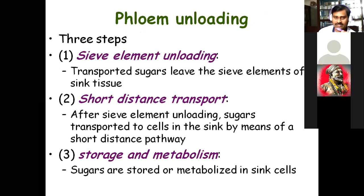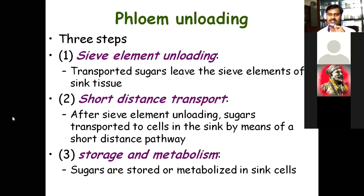Transported sugar leaves the sieve elements of the sink tissue and where there is need it is stored. Short-distance transport also takes place — movement of food material from cell to cell where there is a source or sink. Some metabolically active cells store the food material or sugar and convert it into another form such as starch or cellulose. Cellulose is involved in the formation of cell wall and other cell components, while starch is stored — in tubers, stem, or roots.